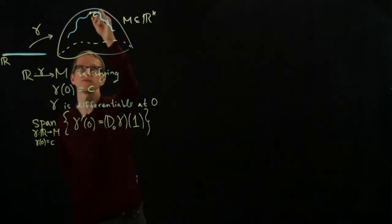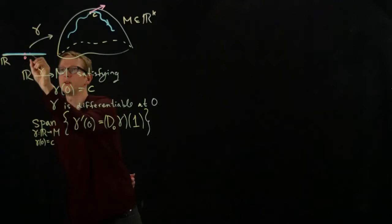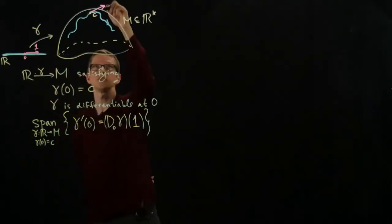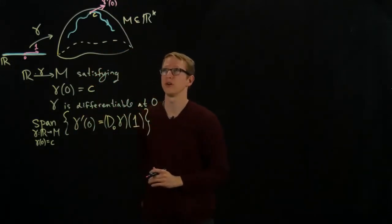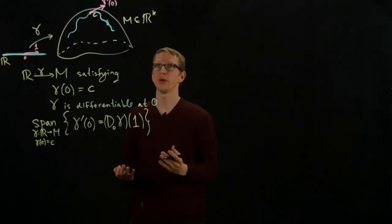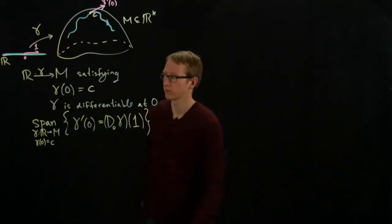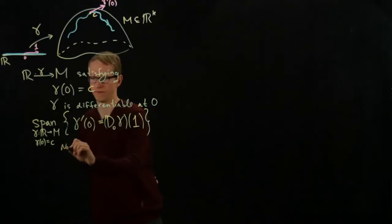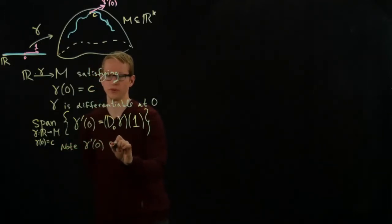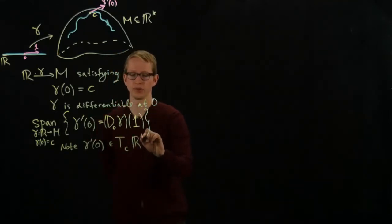So what we're doing is we're looking at the set of all of these vectors after we take the derivative. So for example, this curve maybe has a vector that looks something like this, and that's the image. Here's the point 0, and here's the vector 1. So this vector here, this is gamma prime 0. That's the derivative of gamma at the point 0, and it's some vector in the tangent space of RK at the point C.